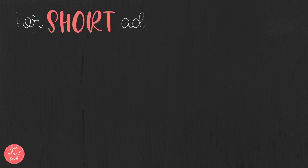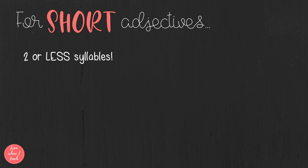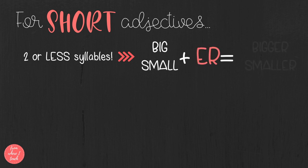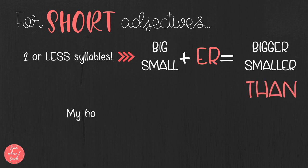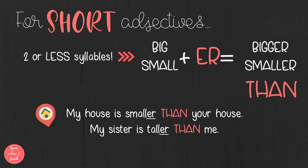So how do comparatives work? For short adjectives — that is, adjectives with two or less syllables — we add '-r' at the end. So 'big' turns into 'bigger' and 'small' turns into 'smaller.' It's really important to add 'than' at the end. For example, my house is smaller than your house, or my sister is taller than me.